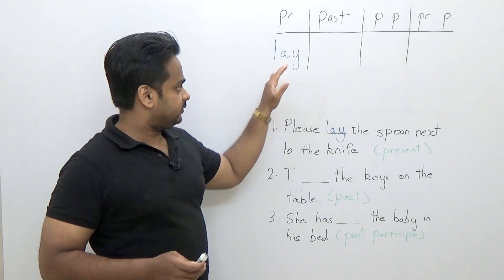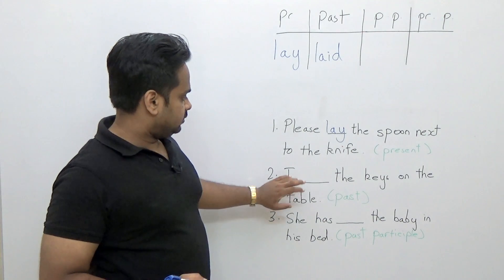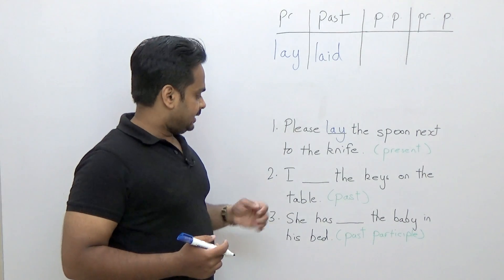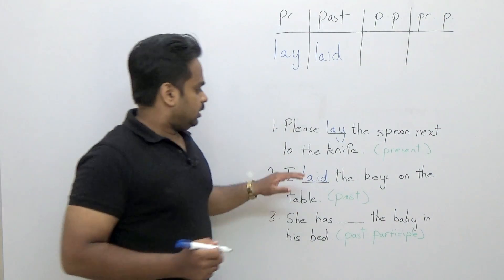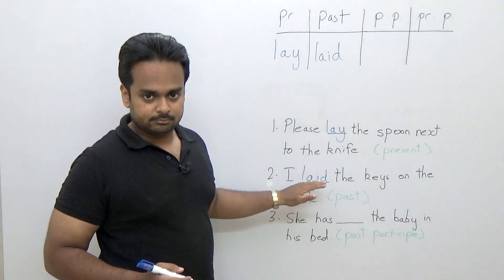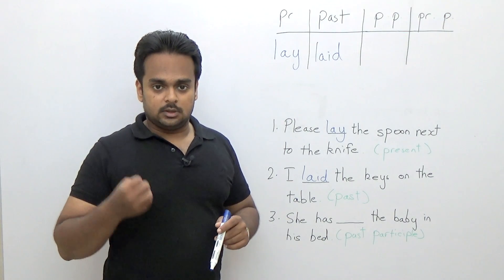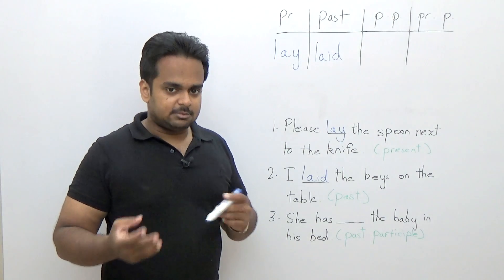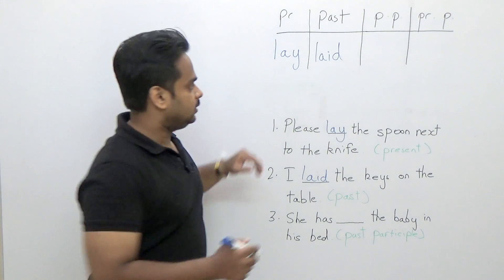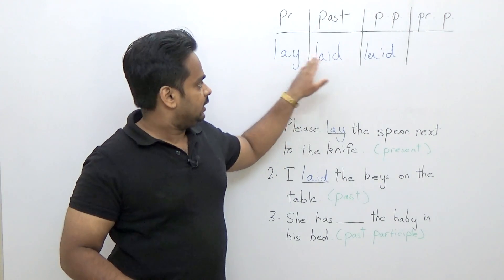The past tense form of the verb 'lay' is 'laid'. For example: 'Yesterday I got home and I laid the keys on the table.' This happened in the past, so we use the past tense form. Now the past participle form — every verb has three forms: present, past, and past participle, sometimes called V1, V2, and V3. The past participle of 'lay' is also 'laid' — so past and past participle are the same: laid, laid.